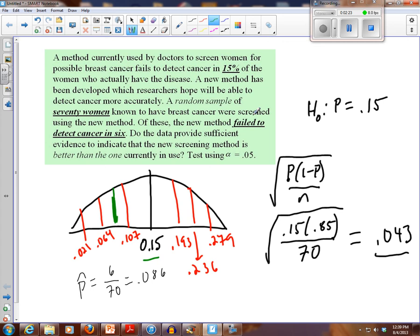So we're going to calculate the z-score, and I'm going to do the 0.086 minus 0.15 divided by that standard deviation, and that's going to be about equal to